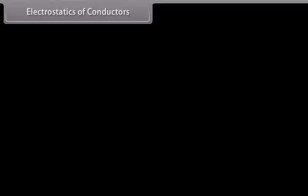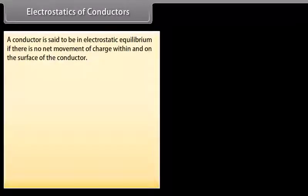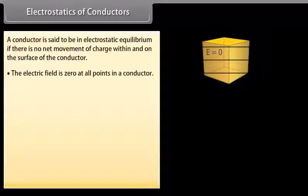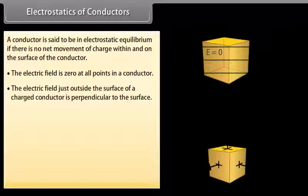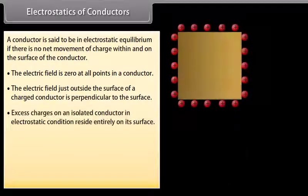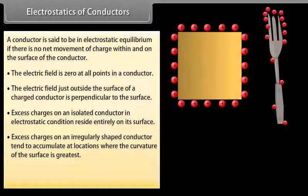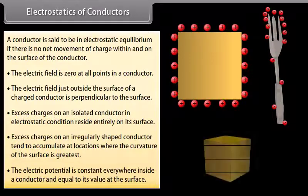Electrostatics of conductors: a conductor is in electrostatic equilibrium if there is no net movement of charge within or on its surface. The electric field is zero at all points inside a conductor. The electric field just outside the surface of a charged conductor is perpendicular to the surface. Excess charges on an isolated conductor reside entirely on its surface. Excess charges on an irregularly shaped conductor accumulate where the curvature is greatest. The electric potential is constant everywhere inside a conductor and equal to its surface value.